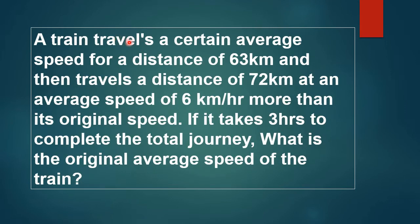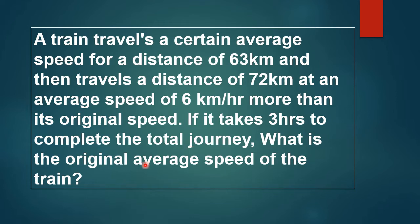A train travels at a certain average speed for a distance of 63 km and then travels a distance of 72 km at an average speed of 6 km per hour more than its original speed. If it takes 3 hours to complete the total journey, what is the original average speed?